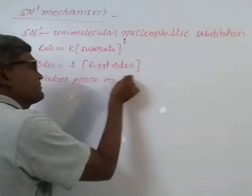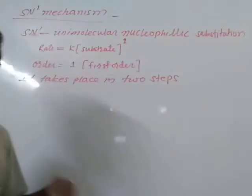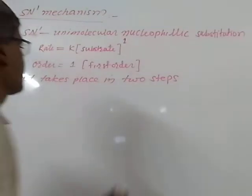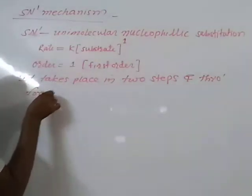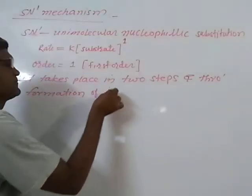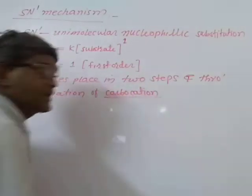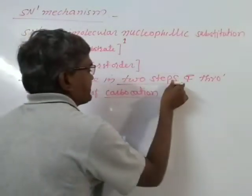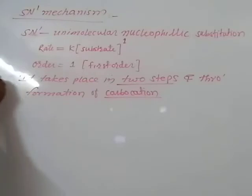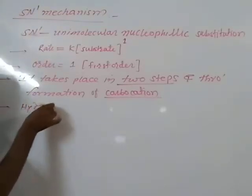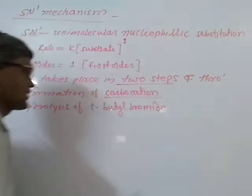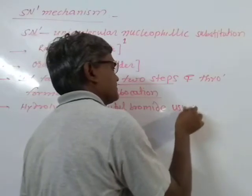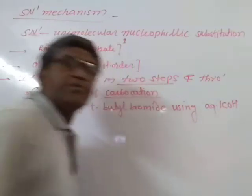SN1 takes place in two steps, and through formation of a carbocation. As an example, we consider the hydrolysis of tert-butyl bromide. Hydrolysis of tert-butyl bromide using NaOH can be used.